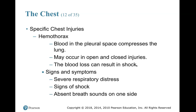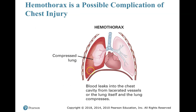A hemothorax is blood in the pleural space that compresses the lung. It may occur with open or closed injuries, and blood loss can result in shock. A hemothorax is like a pneumothorax except it involves blood in the pleural space — and one key thing to look for is that internal blood loss can cause the patient to go into shock. Signs and symptoms include severe respiratory distress, signs of shock, and absent breath sounds on one side. This can turn into a tension hemothorax. Skin condition is a vital sign — never discount it.